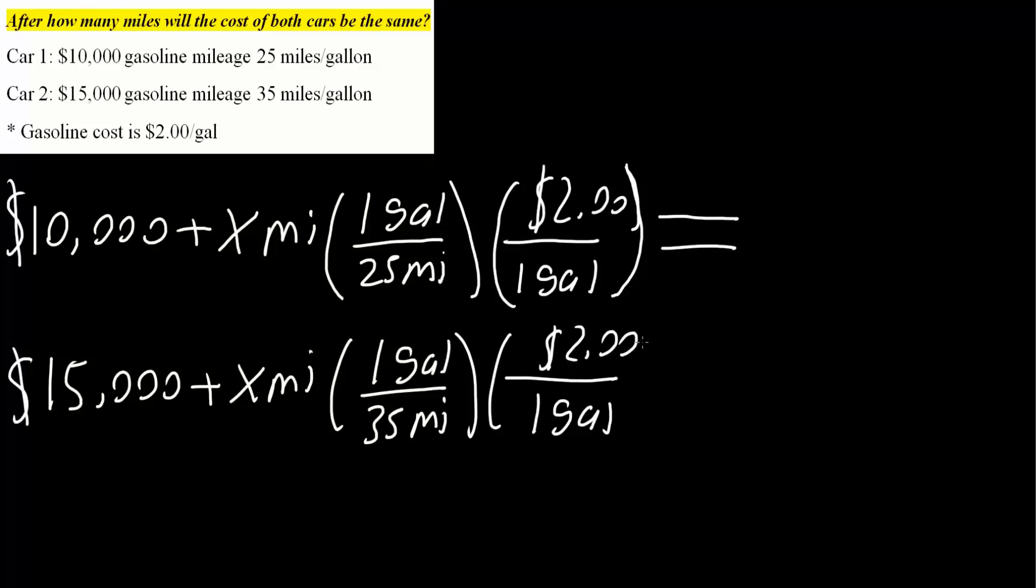Let's check everything before we solve. We have miles, miles cancel, gallons cancel, and now we have a cost. Our initial cost is $10,000 plus the cost associated with how many miles we drive. Now we have a cost, so cost plus a cost. I will solve this part using the TI Inspire.